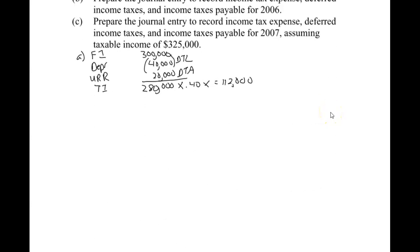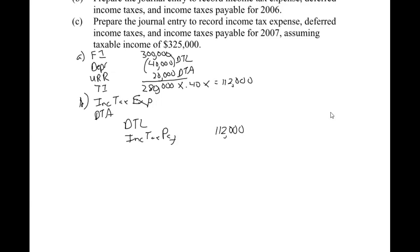Part B is the journal entry. I know I'm going to have income tax expense as my plug number, a deferred tax asset, a deferred tax liability, and income tax payable. We already know income tax payable is 112,000. Now let me calculate the deferred tax liability. The depreciation difference was 40,000 reversing evenly, so it's 10,000 each year in 2007, 2008, 2009, and 2010.